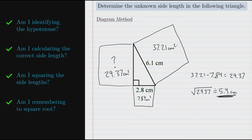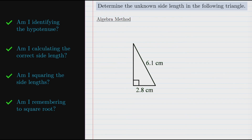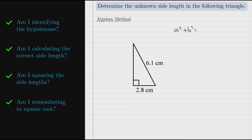Now let's take a look at the algebra method. With the algebra method, I once again recommend that you start by making a note of where the hypotenuse is in our triangle — and there it is again, 6.1 centimeters, the side across from the right angle. We usually start the algebra solution by writing out the Pythagorean theorem equation: a² + b² = c². From that point we start substituting values for a, b, and c.